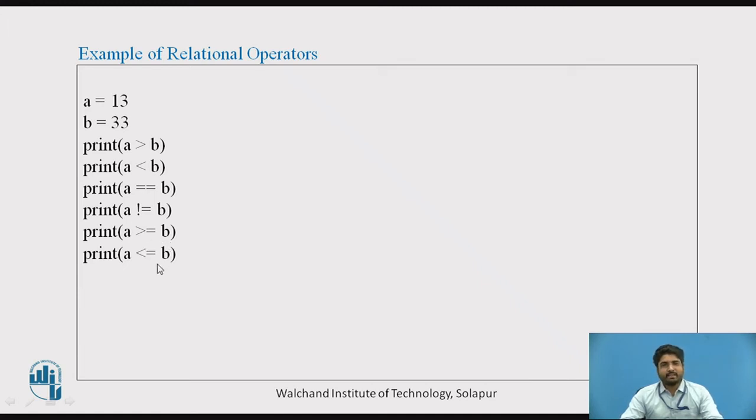The output will show you: the first statement is false, and second is true because a is less than b (13 is less than 33, you get true). a and b are not equal so it shows false, then it shows true here, greater than is false, and here true.